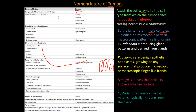Now let's go through some of these names. Composed of one kind of parenchymal cell type: connective tissue and derivatives include a fibroma from fibrous tissue, a lipoma from fat, a chondroma from cartilage, an osteoma from bone. A hemangioma is a tumor of the blood vessels, a lymphangioma is from lymphatic vessels, and you can also have a meningioma.